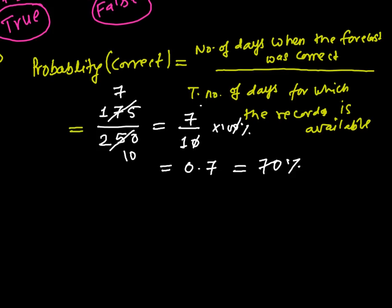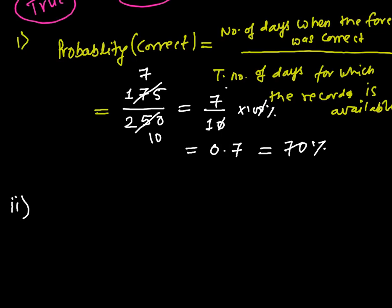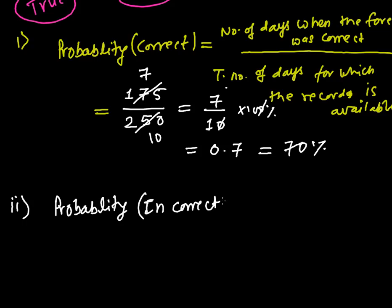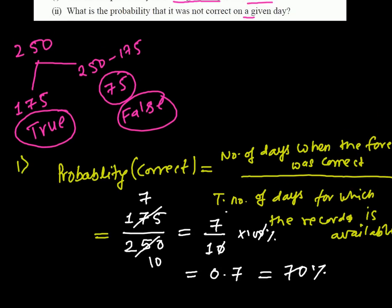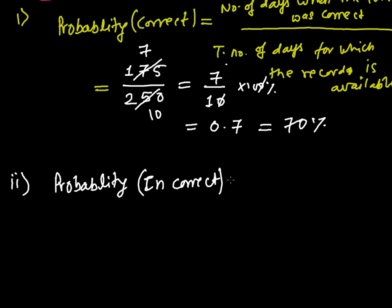Now in the second question we have to find out: what is the probability that on a particular day their prediction will be incorrect? Out of 250 days, 175 days they were correct, but 75 days they were incorrect.